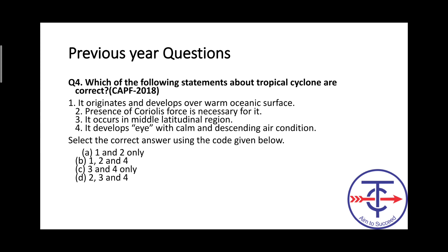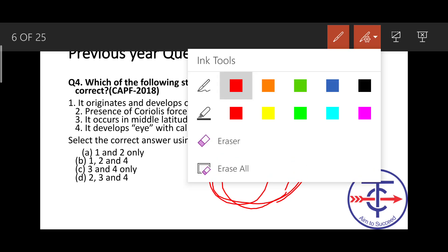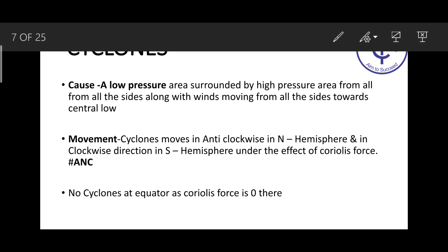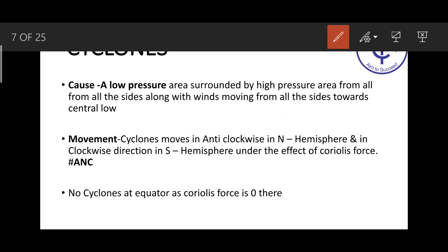First thing that comes to mind — what is a cyclone? Cyclone is also a wind. Remember this: cyclone is also a wind, but it is a wind that moves in a circular direction. So you can say cyclone is a type of wind which moves in circular direction — that is what we call a cyclone. The common cause is always low pressure at the center.